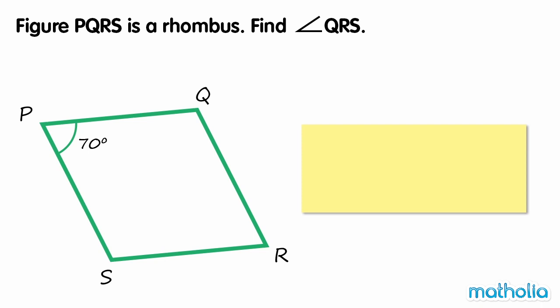Figure PQRS is a rhombus. Find angle QRS. Angle QRS is opposite angle SPQ, which is 70 degrees. Recall that opposite angles of a rhombus are equal, so angle QRS is 70 degrees.